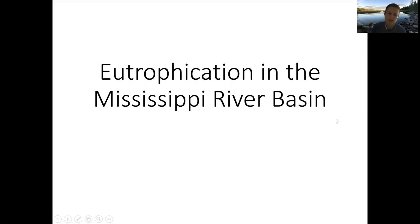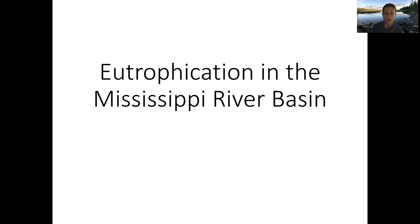I want to end this unit on the chemical properties of fresh waters, where we've really been focusing a lot on oxygen, nitrogen, and phosphorus, and have also had some discussion about trophic status of lakes. I want to end this unit with a look at eutrophication in the Mississippi River Basin. Later in the semester when we start talking about global change, we will revisit eutrophication and talk about ways to mitigate and restore ecosystems that have been eutrophied.